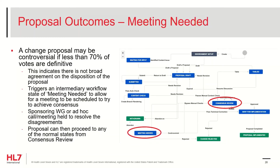If the voting requirements have been met and less than 70 percent of votes are definitive — meaning there are between 30 and 70 percent positive votes — this triggers the proposal to move into the Meeting Needed state. This indicates that the proposal is controversial and consensus is not achieved, therefore a meeting is needed to resolve the controversies. As the submitter of the proposal, you are responsible for setting up a conference call, either on an appropriate workgroup call or a separate call of interested parties. Setting up such a meeting is a manual step that must occur outside of the JIRA workflow, and as a submitter, progressing the proposal forward from here is in your hands.